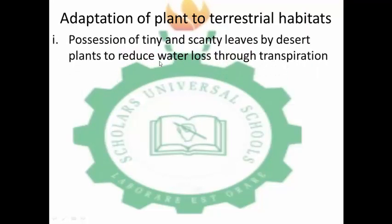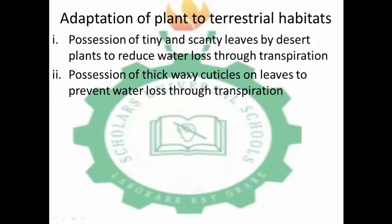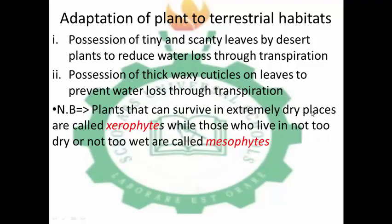Still on adaptation of plants to terrestrial habitat: desert plants possess tiny and scanty leaves to reduce water loss through transpiration — transpiration is the loss of water as vapor from a plant, so they have tiny and scanty leaves to reduce water loss. Possession of thick bark with cuticles on leaves to prevent water loss through transpiration. Plants that can survive in extremely dry places or deserts are called xerophytes, while those that live in neither very dry nor very wet conditions are called mesophytes — the plants we see in our surroundings are mesophytes.